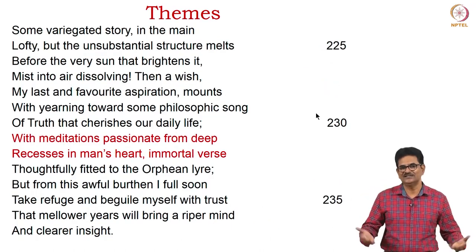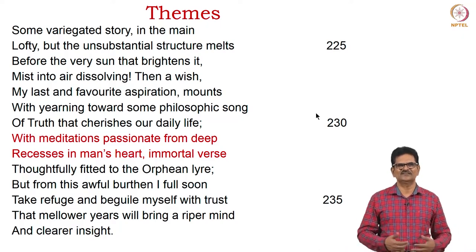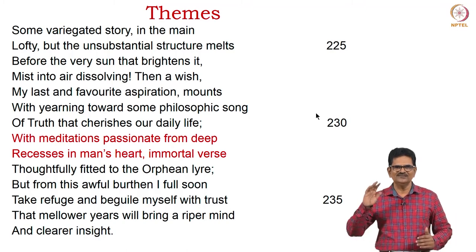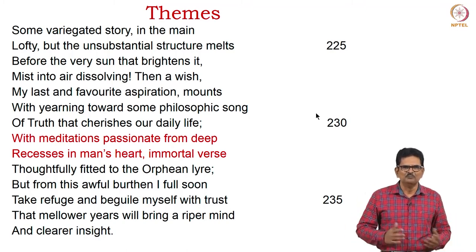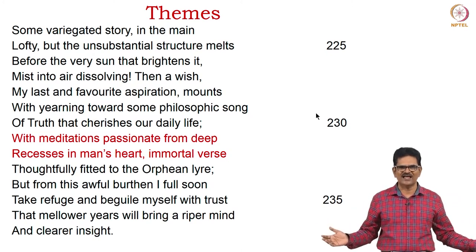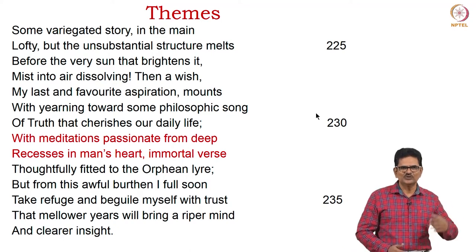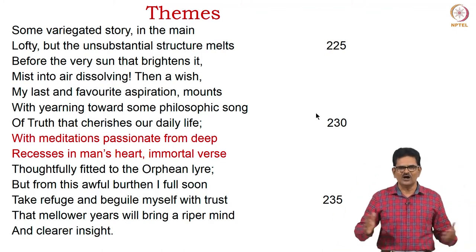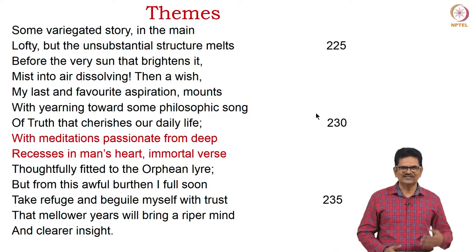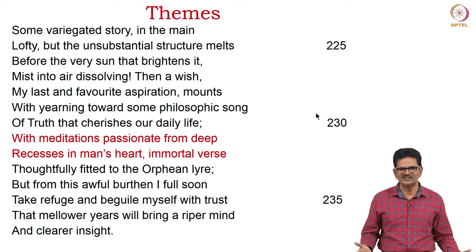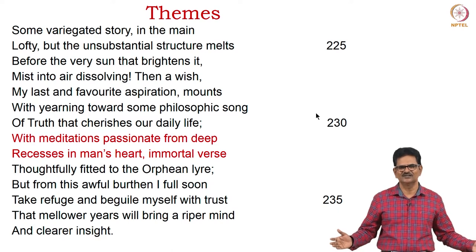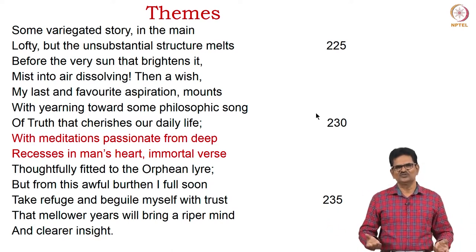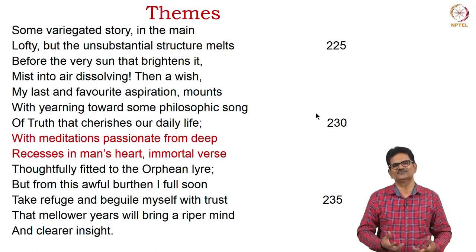He continues exploring themes: 'Some variegated story, lofty in the main, but the unsubstantial structure melts before the very sun that brightens it, mist into air dissolving. Then a wish, my last and favourite aspiration, mounts with yearning toward some philosophic song of truth that cherishes our daily life with meditations passionate from deep recesses in man's heart — immortal verse, thoughtfully fitted to the Orphean lyre. But from this awful burden I full soon take refuge and beguile myself with trust that mellower years will bring a riper mind and clearer insight.' It is a matter of time for Wordsworth to get into the innermost parts of the mind and heart to discover thoughts for his own poems.